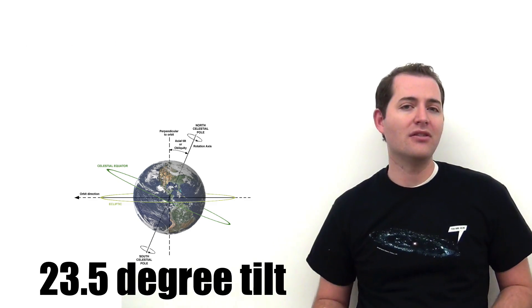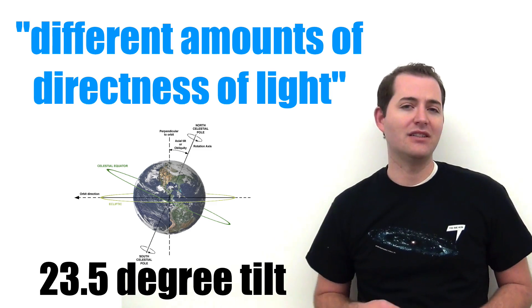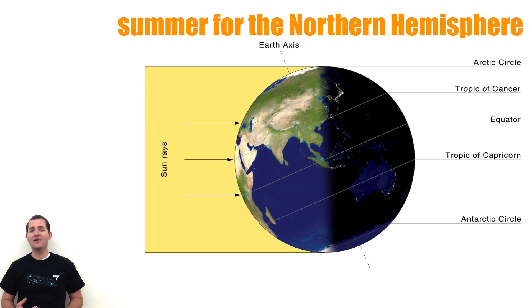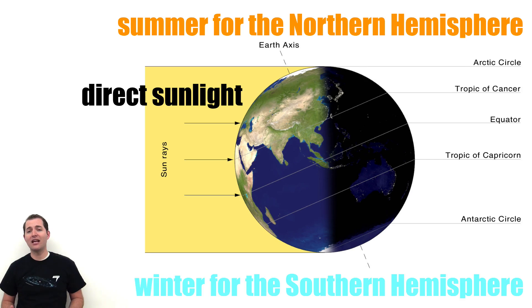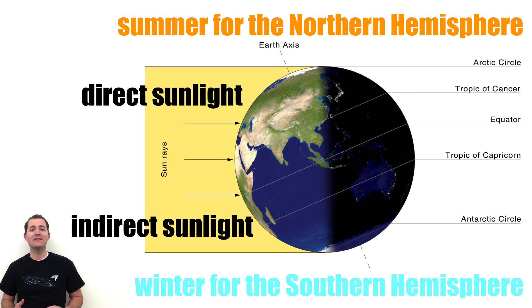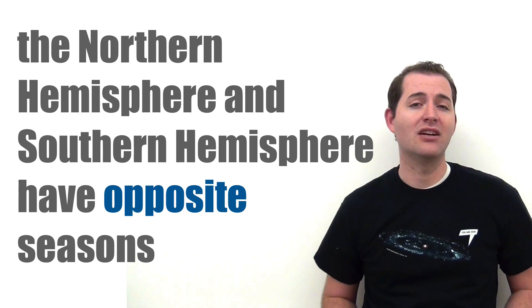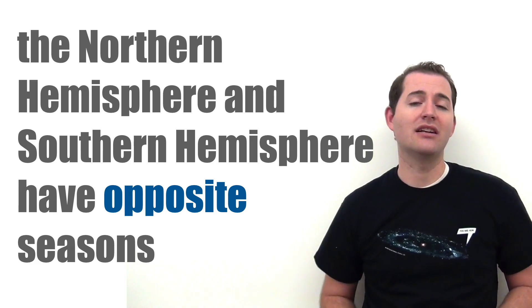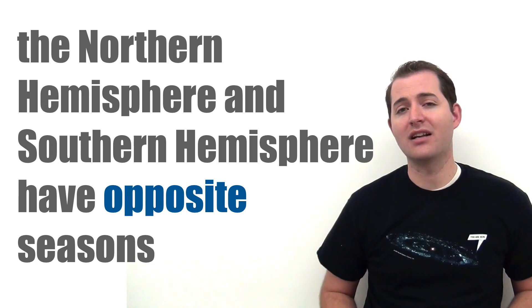This axis tilt makes it so that the northern and southern hemispheres receive different amounts of directness of light at different times of the year. During the summer, the northern hemisphere is tilted towards the Sun and receives more direct sunlight, whereas the southern hemisphere is tilted away and receives less direct sunlight. This also explains why the hemispheres have opposite seasons — when it's summer in the northern hemisphere, it's winter in the southern, and vice versa.